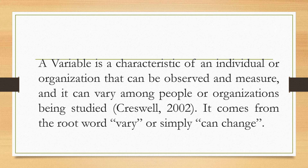Let's discuss first the meaning of variable. When we say variable, it is a characteristic of an individual or organization that can be observed and measured, and it can vary among people or organizations being studied. According to Creswell (2002), it comes from the root word 'vary,' or simply, can change. Variables can be observed and measured — they are what we observe and measure, and they can be a person or an organization.